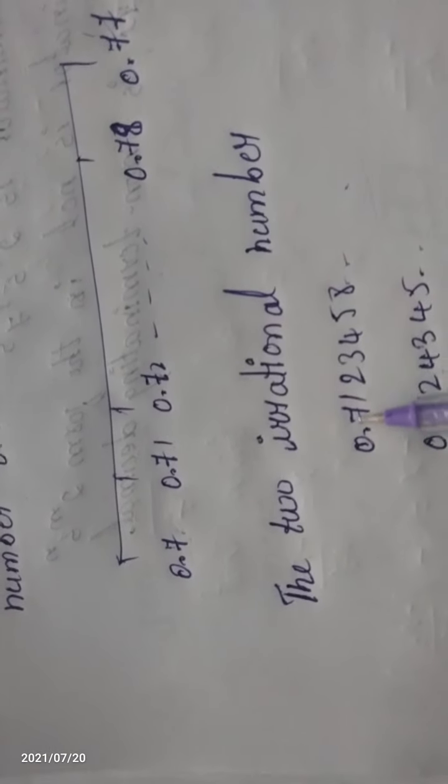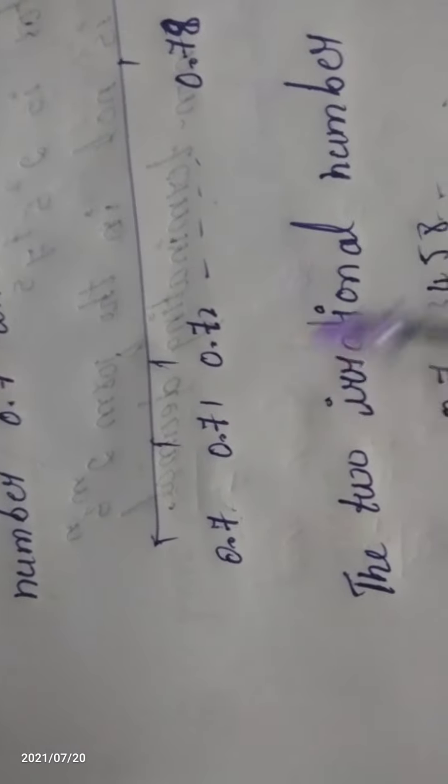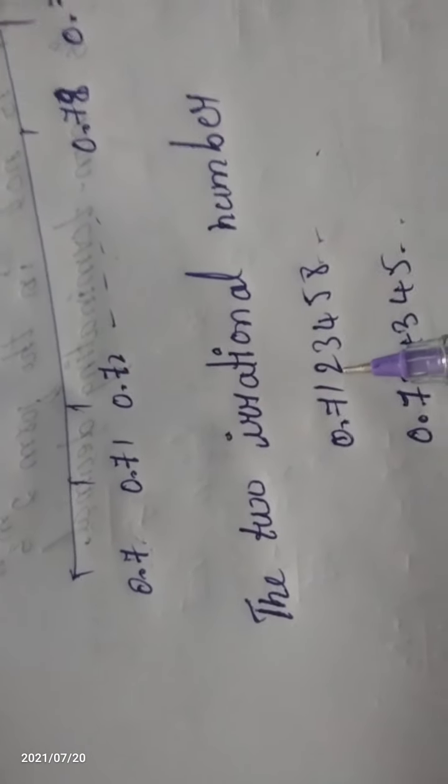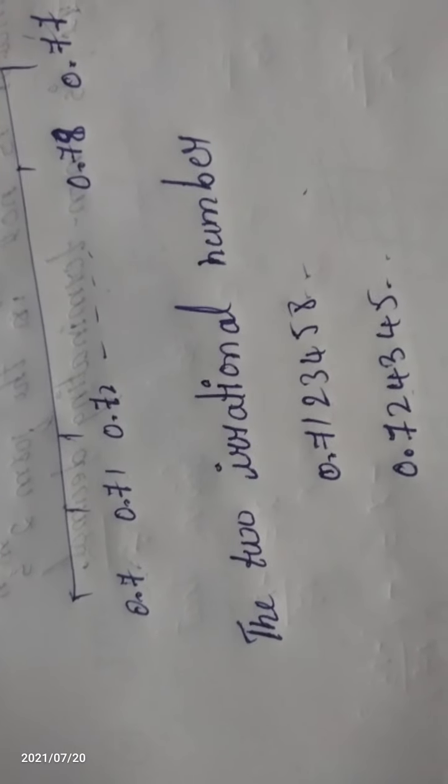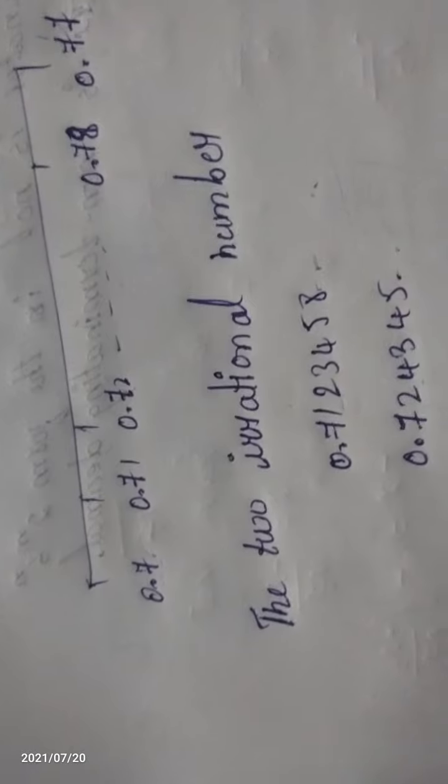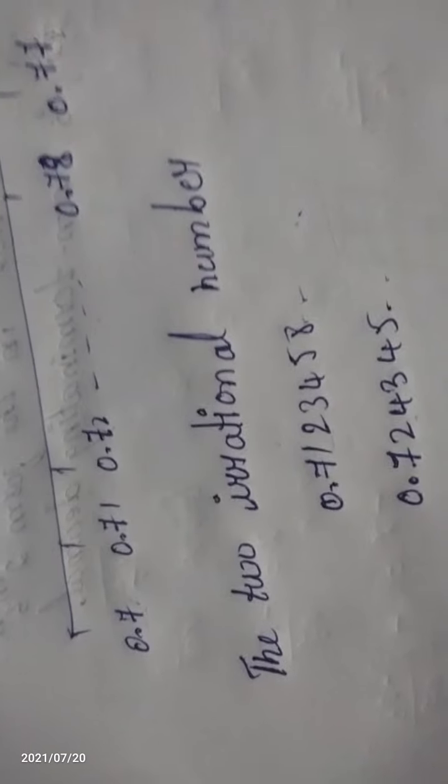We have to find two irrational numbers. I am taking 0.7 — after 0.71 you can write whatever number you want. Any number you can write after 0.71: 2, 3, 4, 5 — any number. So 0.71 is our first irrational number. On the number line we have 0.7 and 0.77, and between them are 0.71 and 0.72.